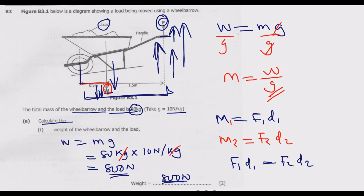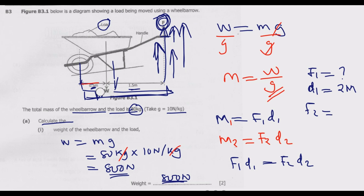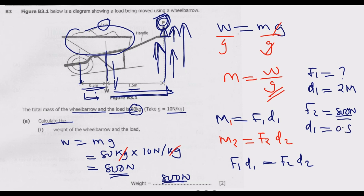Force one is what we are looking for. Distance one — the distance from the pivot to where force F is applied — is 0.5 meters plus 1.5 meters, which equals 2 meters. Force two is the weight of the wheelbarrow and load, which is 800 newtons. Distance two, from the pivot to where the weight acts, is 0.5 meters.